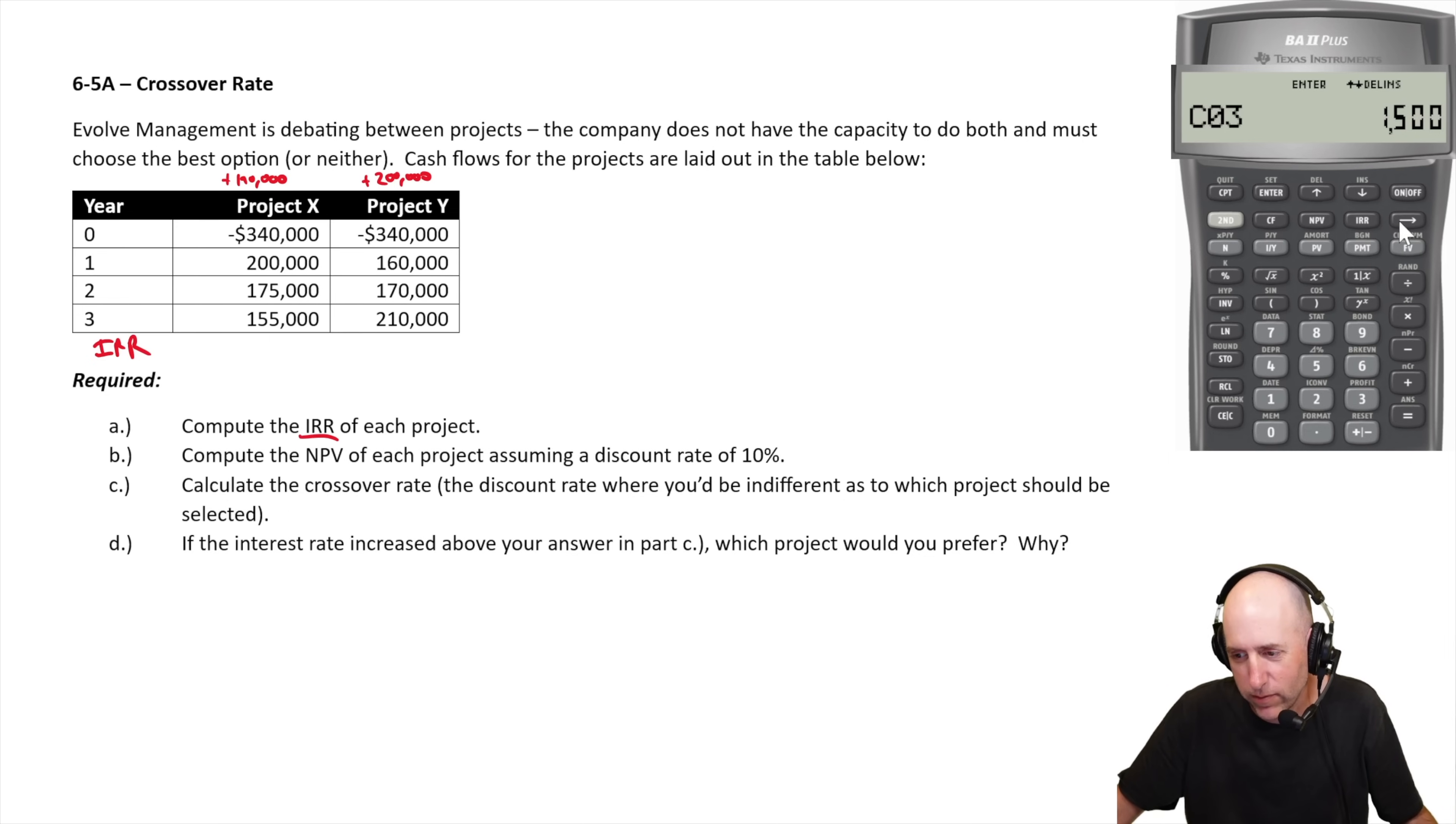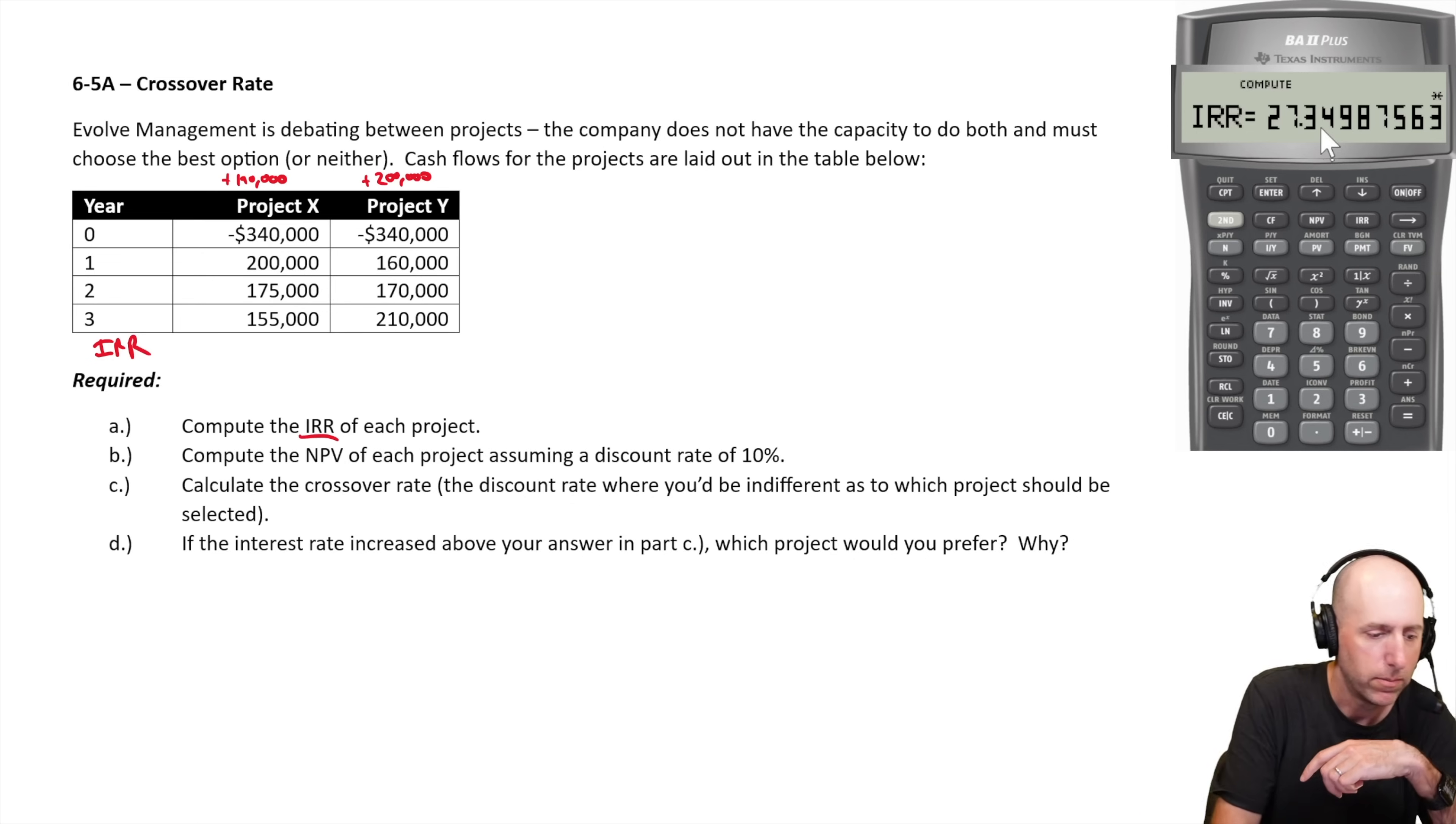Enter. Cash flow at time three, $155,000, oops, screwed that up, $155,000, glad I caught that, enter. And then I just hit IRR, compute, and the IRR is very high, 27.3%.